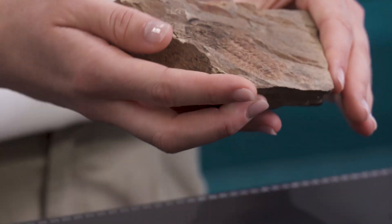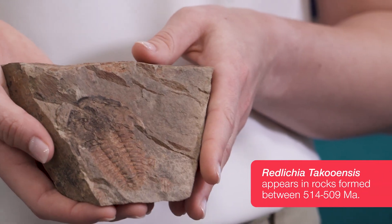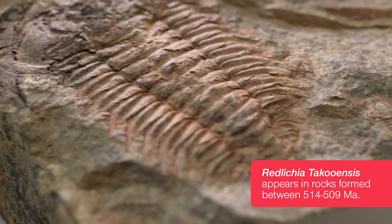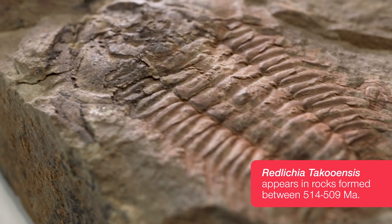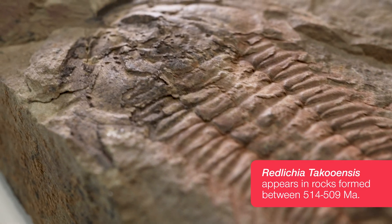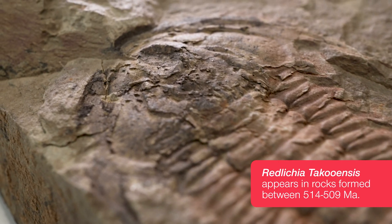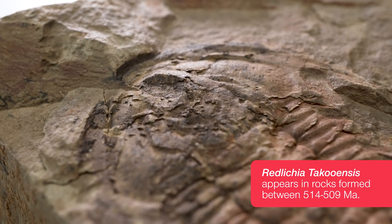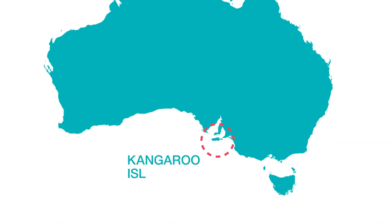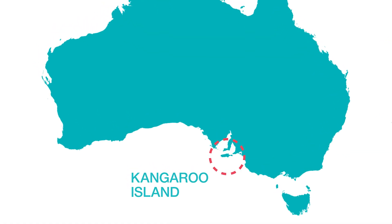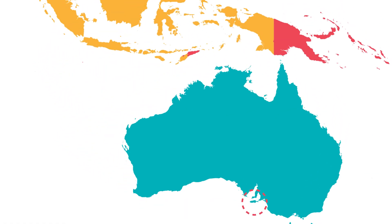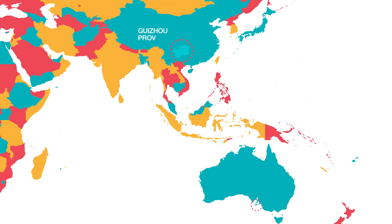For example, this trilobite, Redlichia tachoensis, is an index fossil. It only appears in rocks between 514 and 509 million years old, and serves as a marker for rocks of the same age all around the world. This one is found on Kangaroo Island in South Australia, and can also be found in the Guizhou province in South China.